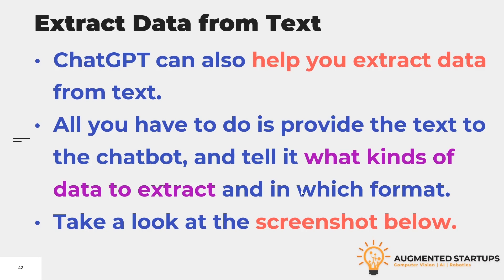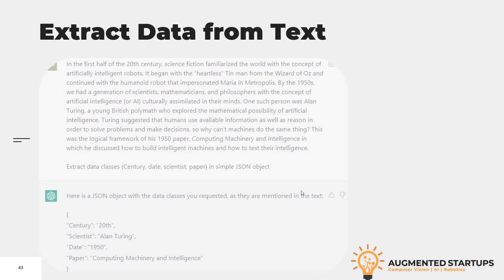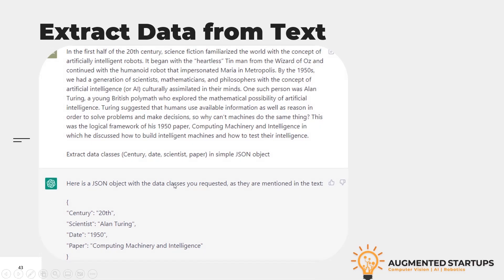Please take a look at the screenshot on this slide. I wrote a paragraph: 'AI written in the first half of the 20th century science fiction familiarized the world with the concept of artificially intelligent robots. It began with the heartless Tin Man from Wizard of Oz and continued with the humanoid robot that impersonated Maria in Metropolis.'